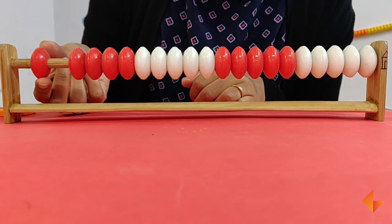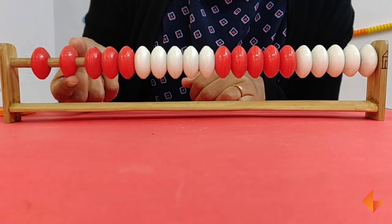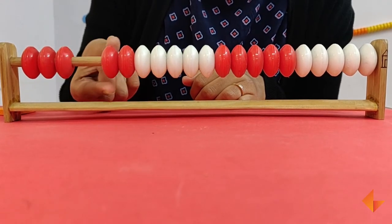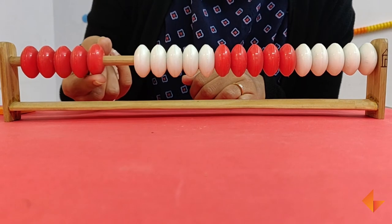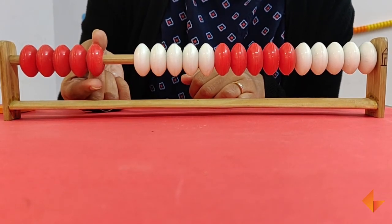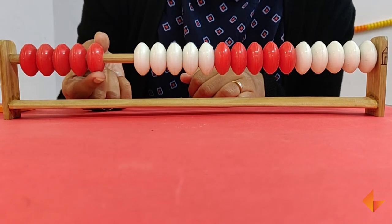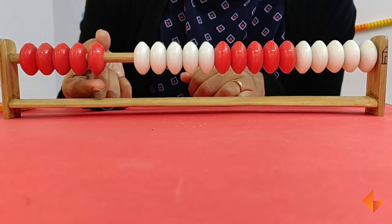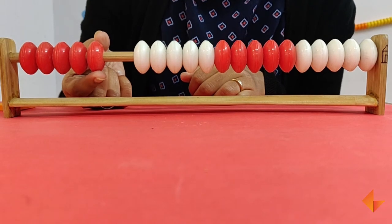They must say one and move one bead: 2, 3, 4, 5. Moving a single bead when they say one number is called 1 to 1 correspondence and is a very important skill that children need to develop in pre-KG.